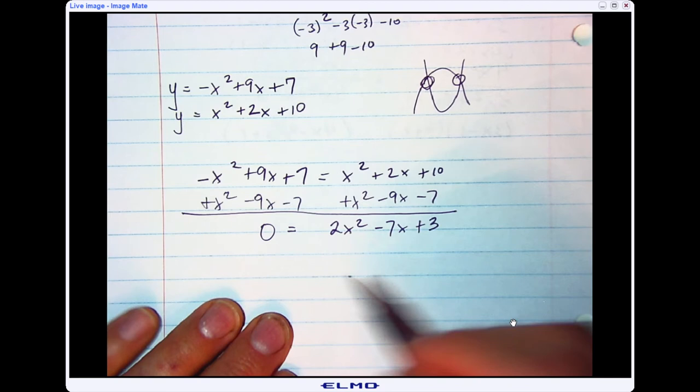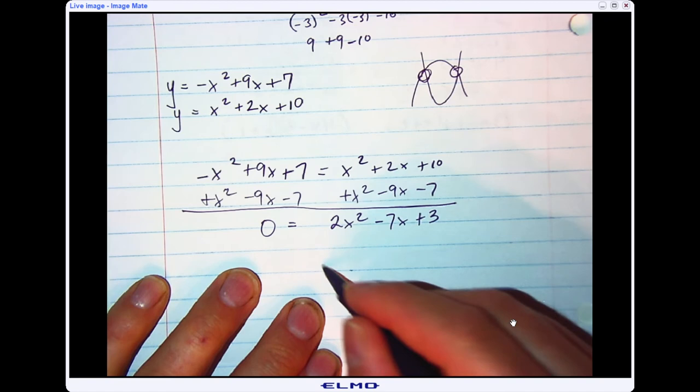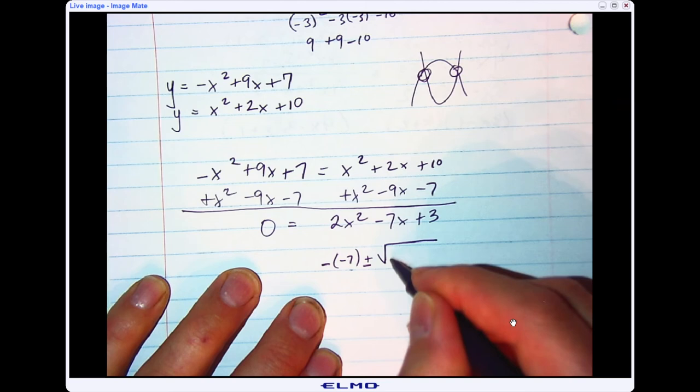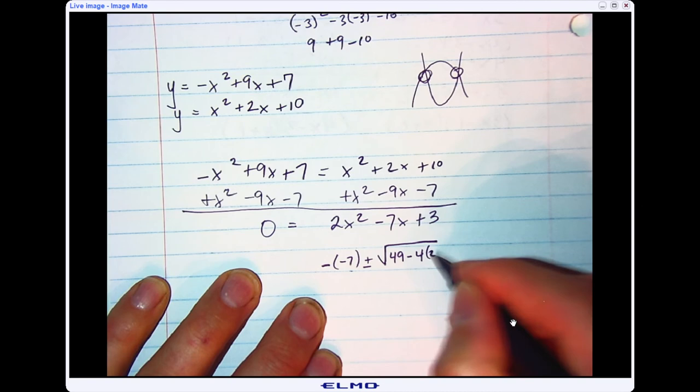So it's the opposite of b, so the opposite of negative 7, plus or minus b squared, so negative 7 squared is 49, minus 4 times a times c, all over 2a.